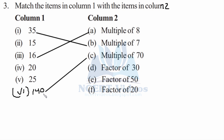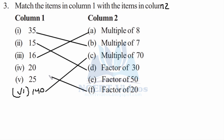For the factor part, we will use column 1, because a factor is something which is smaller than or equal to the number. So factor of 30 is 15, since 15 times 2 is 30 — that is second in column 1. Factor of 50: 25 times 2 is 50. For the fourth item, 20 times 1 is 20. And the fifth item, 25 is a factor of 50. So 25 is matched as the factor of 50.